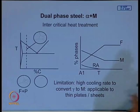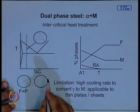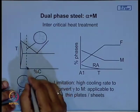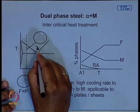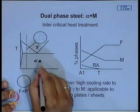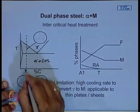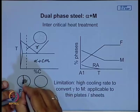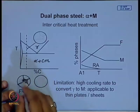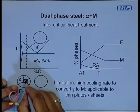Let us talk about dual phase steel. In a dual phase steel, a normal heat treatment process is applied. Suppose this is the steel composition on the iron-carbon diagram; this is the austenite region, this is the ferrite plus cementite region. The normal structure of this composition has pearlitic regions and ferrite grains — two distinct regions: primary ferrite and pearlite.